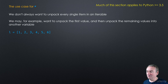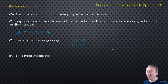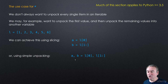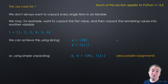Let's take the list 1, 2, 3, 4, 5, 6. We can do this using slicing: A equals L[0] and B equals L[1:] to get the rest. So A will be 1 and B will be [2, 3, 4, 5, 6]. Or we can use simple unpacking and combine these two lines into one. This is also sometimes called parallel assignment, but it's just unpacking.